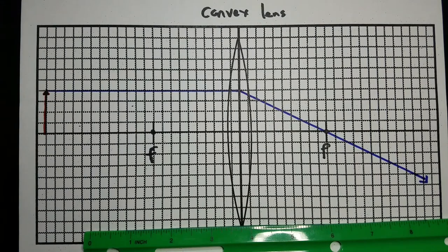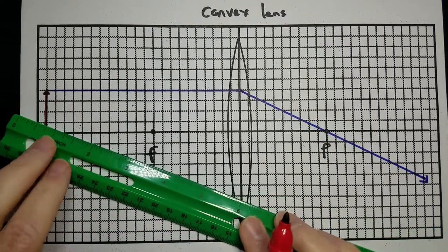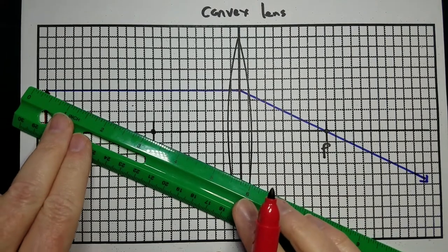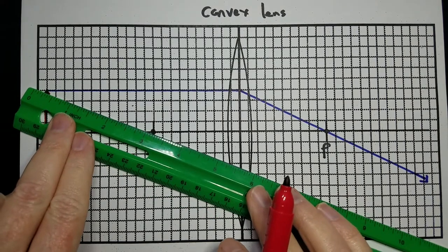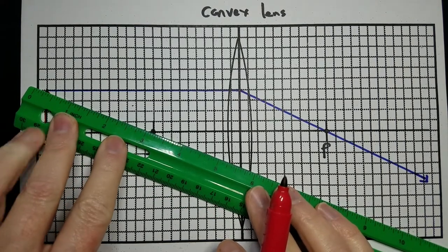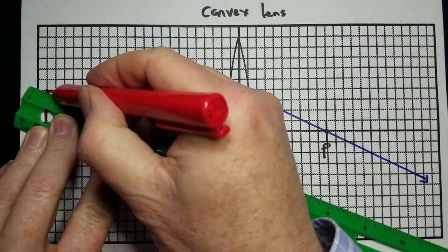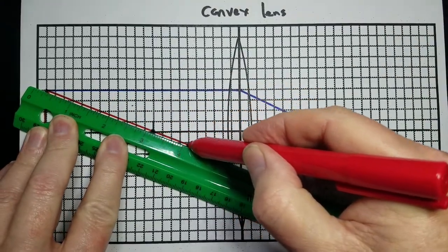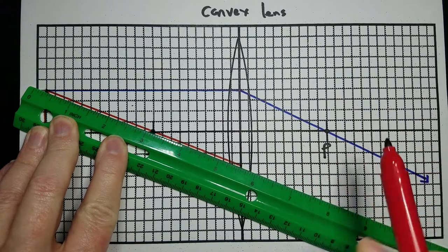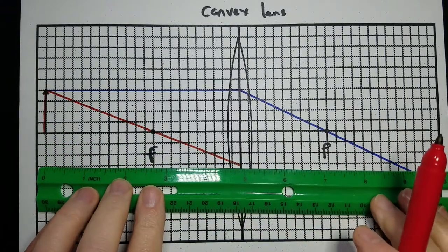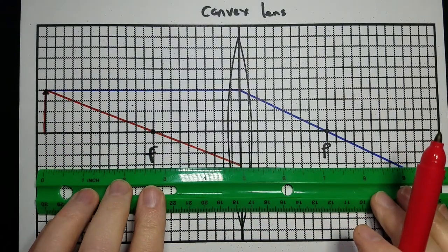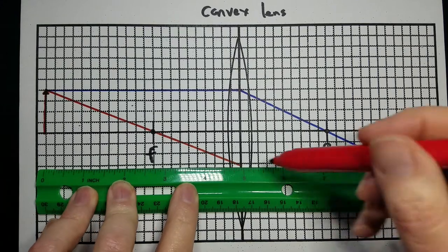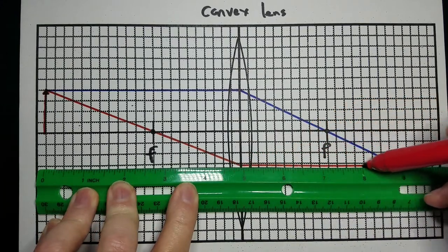That one is parallel to focal point. The other one is focal point to parallel. You can only use a focal point once, so now that we've used that one, we can't use it again. I'm going to line up the top of my object with the near focal point and draw a line from the top of the object to the near focal point until it hits the lens, and then it's going to refract parallel to the principal axis and go off in that direction.